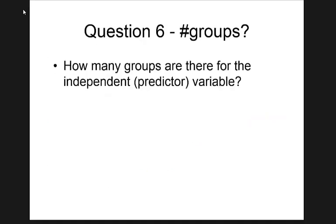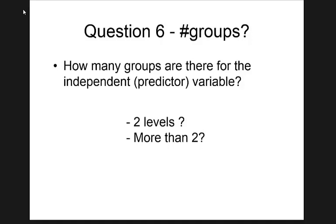Question six: how many groups? The golden number statisticians care about is two. If it's two groups, use student t-test. If it's three or more, use ANOVA. What matters is whether it's two or greater than two — that's the cutoff.